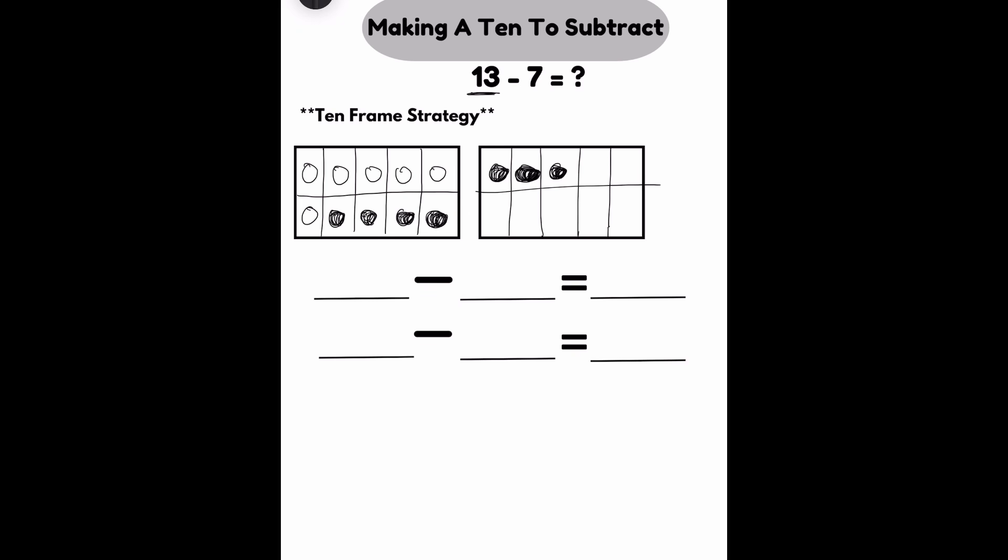So I just shaded in 7 to show that I'm taking away 7. When I take away 7, I have 1, 2, 3, 4, 5, 6 left.